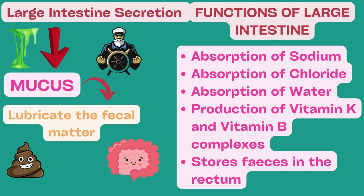Next, we will look at the absorptive function. The mucosa of the large intestine has a high capability for active absorption of sodium, and the electrical potential gradient created by absorption of sodium causes chloride absorption as well. Absorption of sodium and chloride ions creates an osmotic gradient across the large intestinal mucosa, which in turn causes absorption of water. The large intestine can absorb up to 5-8 liters of fluid and electrolytes each day. When the total quantity entering the large intestine through the ileocecal valve exceeds this amount, the excess appears in the feces as diarrhea.